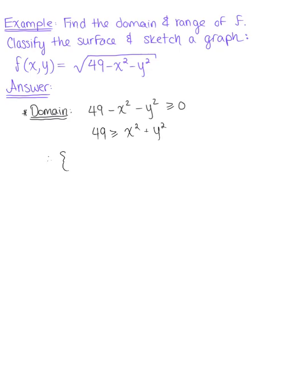So therefore the domain is the set of all ordered pairs (x,y) such that x² plus y² is less than or equal to 49.